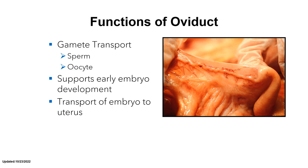Let's start our discussion with the oviduct. The oviducts are the functional links between the ovary and the uterus. The oviduct is also the site of fertilization, and it functions to transport the gametes — the sperm and the oocyte. It also supports early embryonic development and transports the embryo to the uterus.